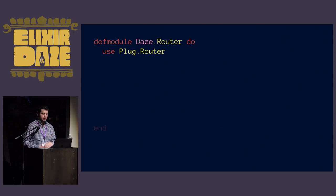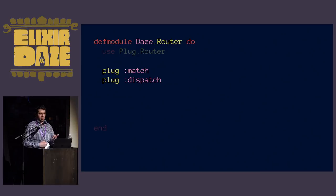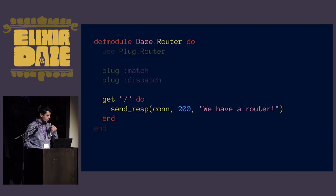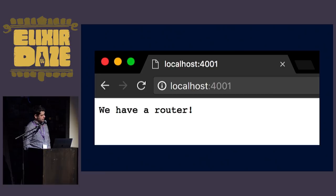In order to use Plug.Router we have to use two plugs it exposes: match and dispatch. Match will match a GET request to a path with an implementation you've defined and save that, then dispatch will actually call that implementation - so you can put plugs in between those two. Let's go ahead and define a GET request to the root path and send a 200 response saying 'we have a router.' We run it with mix run --no-halt, go to localhost 4001, and sure enough, we have a router.